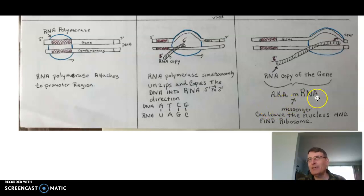This needs to be modified first. A few things will be done to it, and then it can leave the nucleus, find a ribosome, and a protein can then be made at that point.